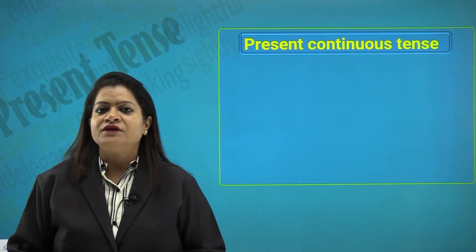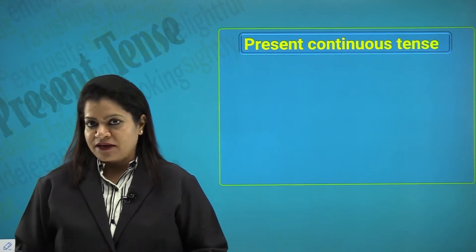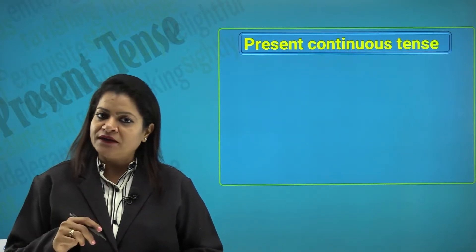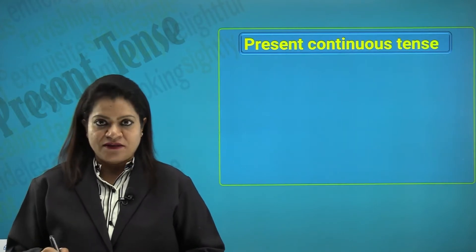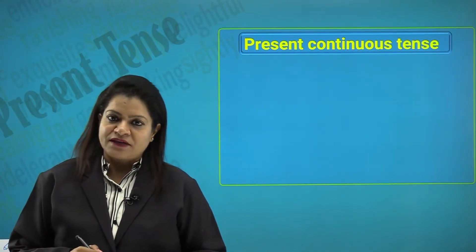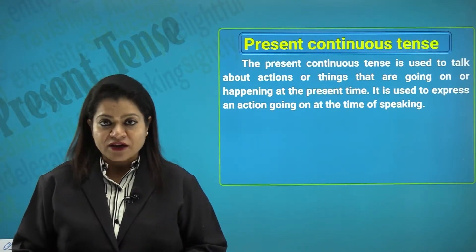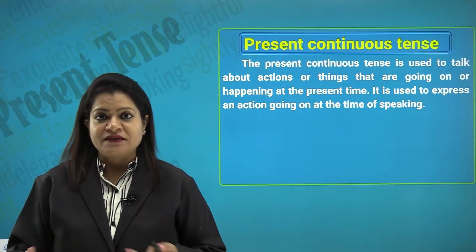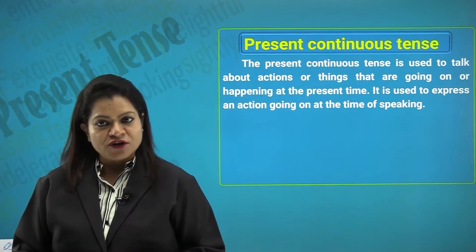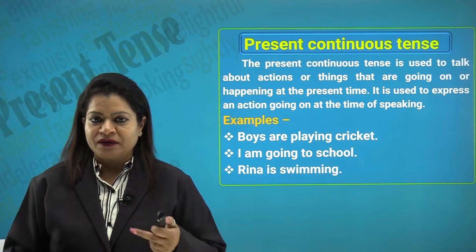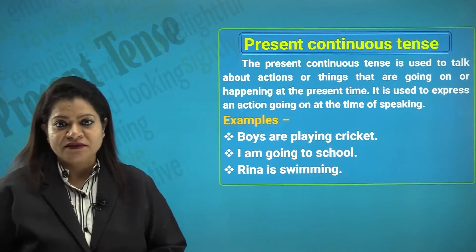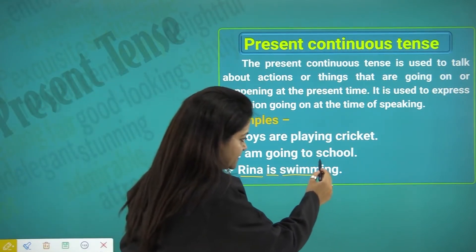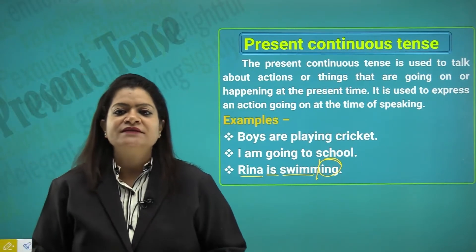Let's come on to the present continuous tense, which denotes an action being done at the time of talking about it. Right now I am talking to you, and you are all listening and watching — these actions being done continuously at a given point of time in the present scenario are called present continuous tense. Examples: 'Boys are playing cricket,' 'I am going to school,' 'Rina is swimming.' The structure uses the subject + a 'be' form (is/am/are) + verb + ing.